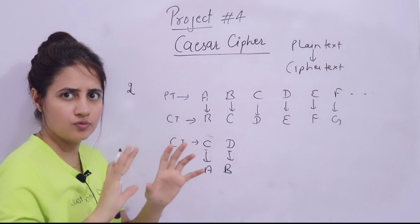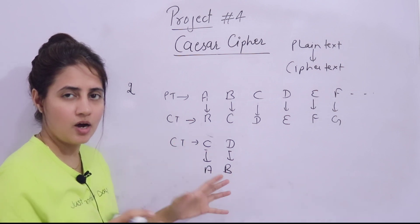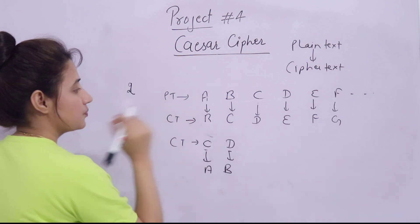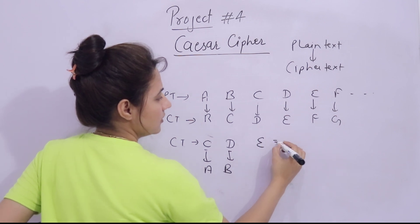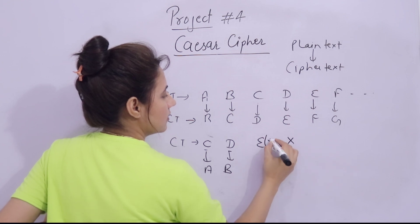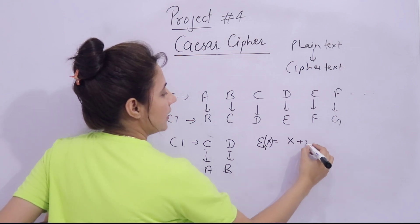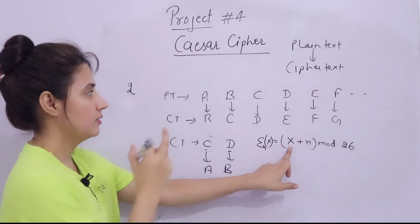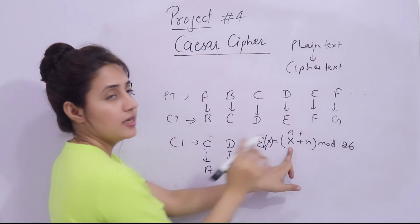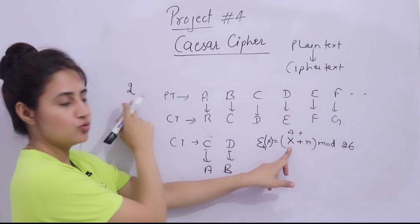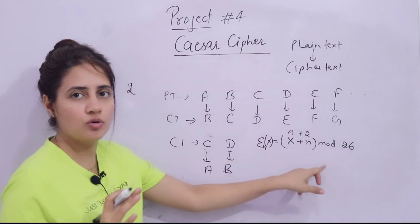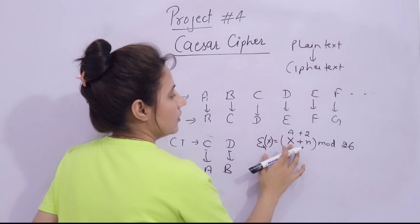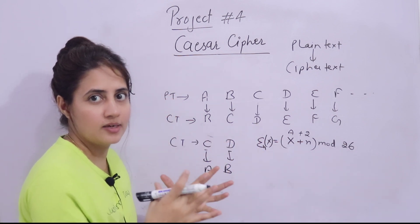I hope you got the basic idea of Caesar cipher — how the shifting is done during encryption and decryption. Now the formula: the basic formula for encryption is (X + N) mod 26. Here X is the letter — or rather the position of that letter. When we write down all the alphabets, the index starts from 0, so a=0, b=1, c=2, up to z=25.